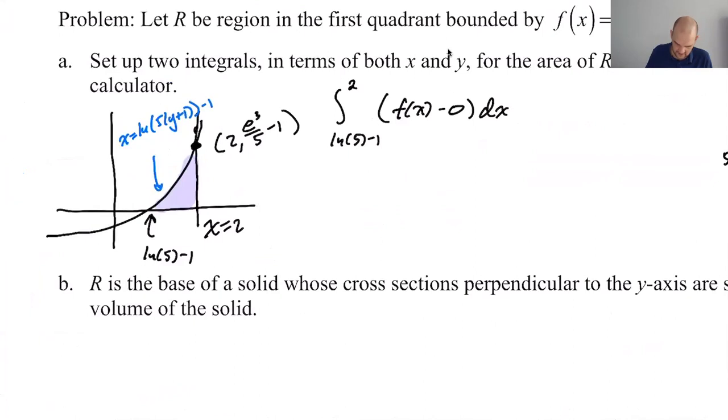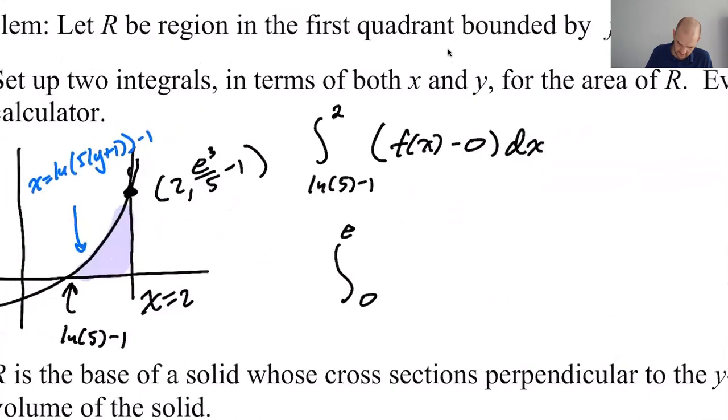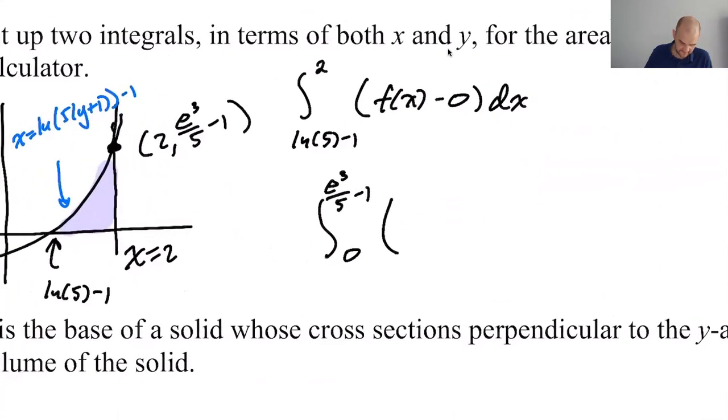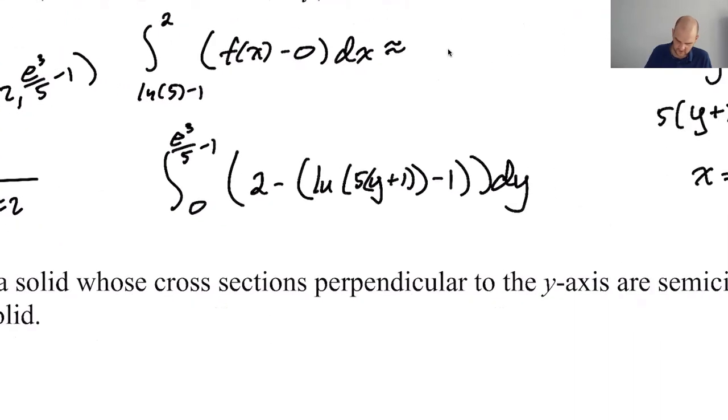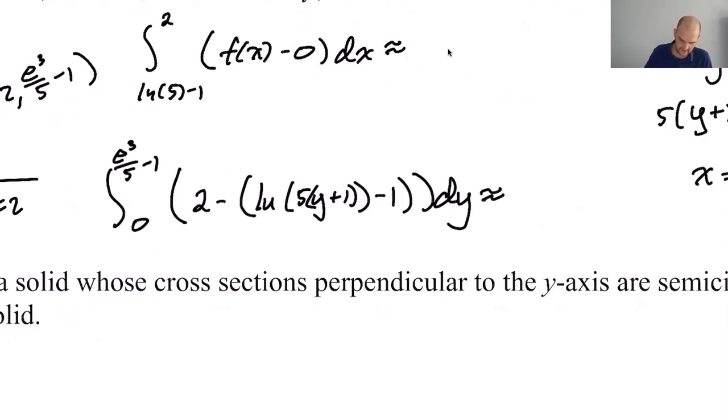Okay. So in terms of y, it's going to be from bottom to top. So from 0 to e cubed over 5 minus 1. Now the function, we have to do right take away left. So the right-hand curve is 2 minus the left-hand curve is the natural log of 5 quantity y plus 1 minus 1. And then, this will be exciting to, I'm guessing these will be approximations.